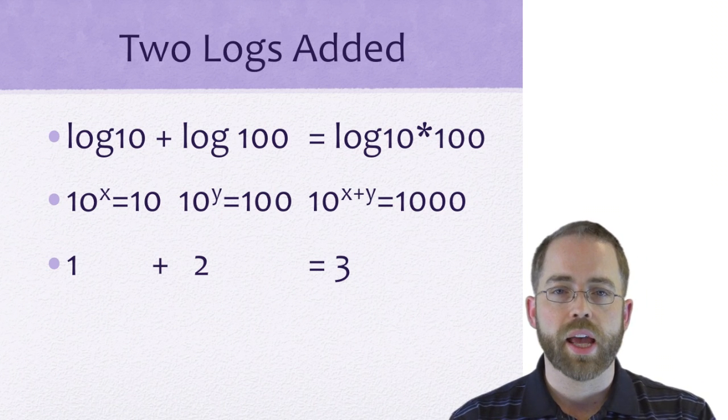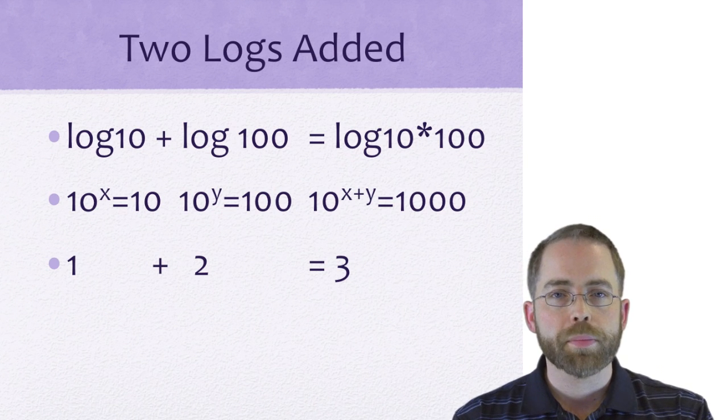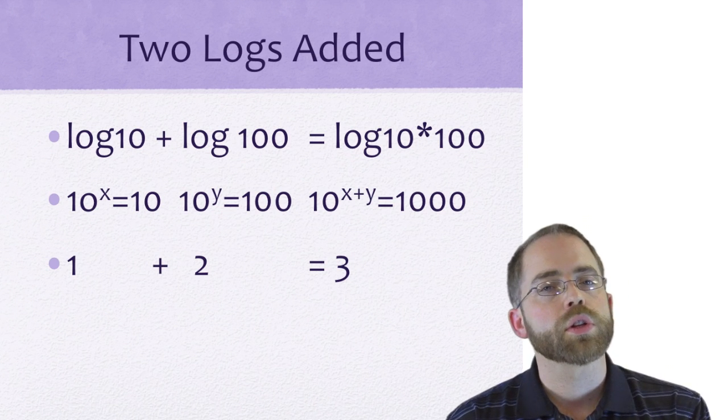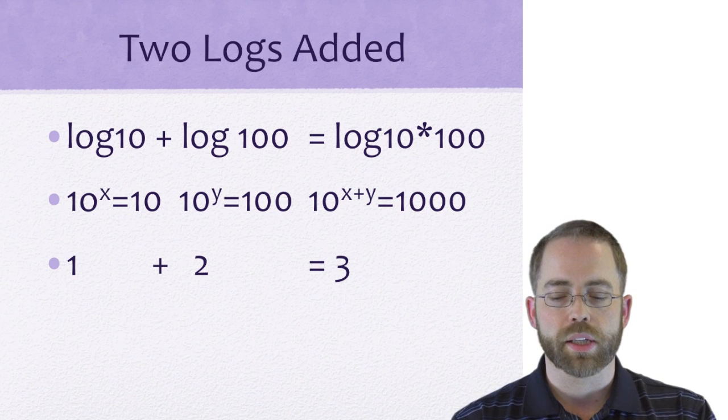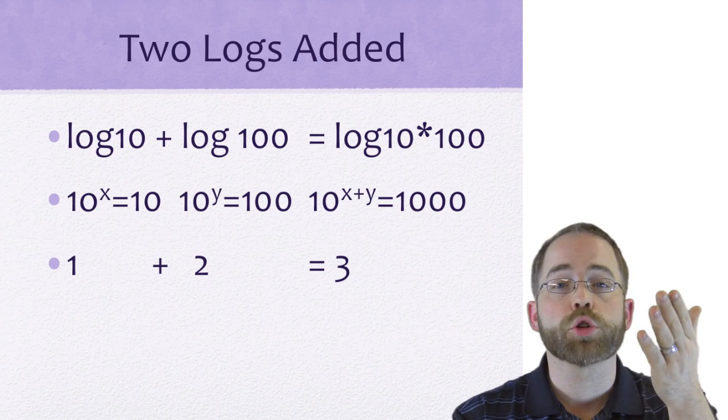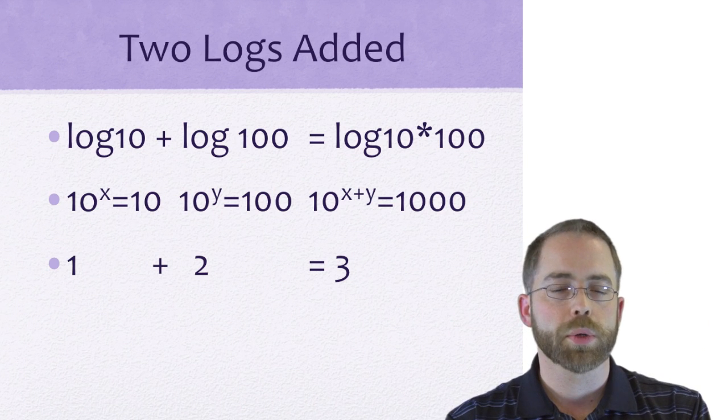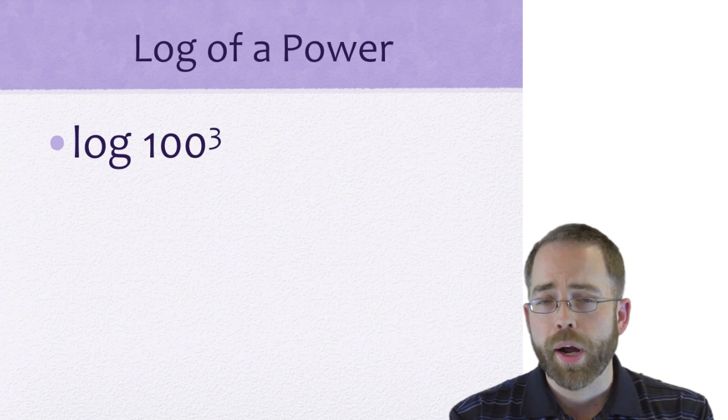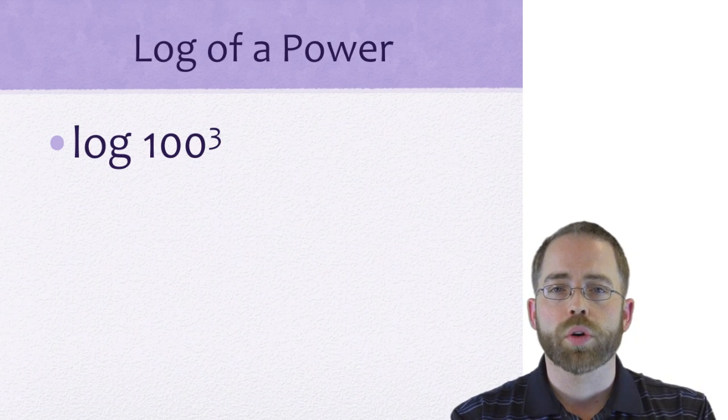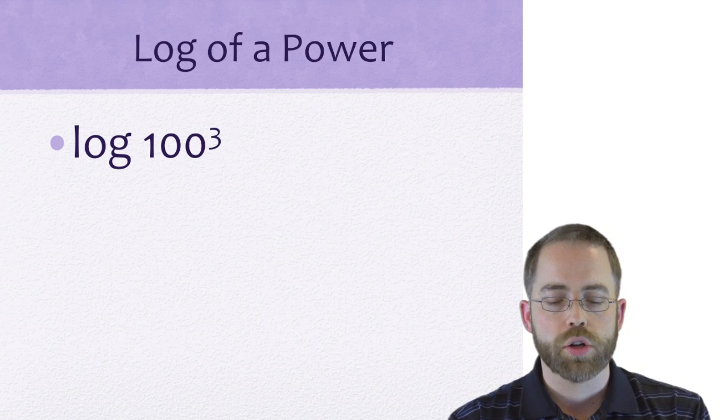This should correspond immediately with the properties of exponents that you know: 10 to the x times 10 to the y is 10 to the x plus y. Log of something plus log of something else equals the log of those two things being multiplied. The thing you'll hear me say a lot, and you should practice saying it to yourself: two logs added is one log multiplied.